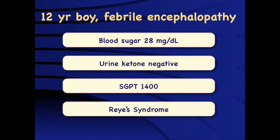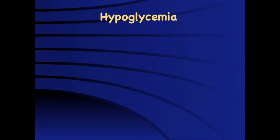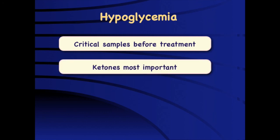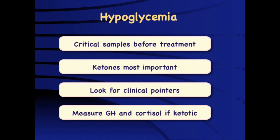Management of hyperinsulinism is quite challenging, requiring diazoxide and octreotide temporarily, but most cases of persistent hyperinsulinism due to potassium ATP channel defects require surgery — either near-total or total pancreatectomy. For endocrine causes, we replace the deficient hormones. Glycogen storage disease children require NG tube feeding or cornstarch diet. For galactosemia, we stop lactose. In summary: hypoglycemia requires taking critical samples before starting treatment; ketones are the most important distinguishing feature; look for clinical pointers and measure growth hormone and cortisol before labeling a child as accelerated starvation.